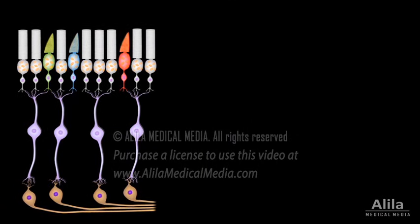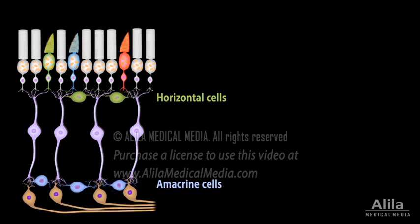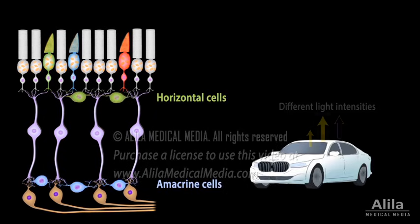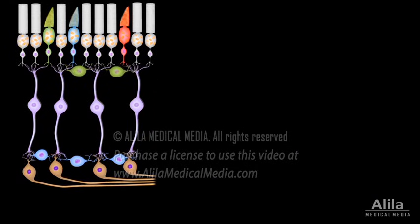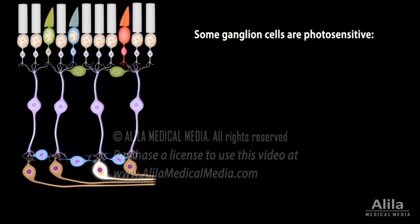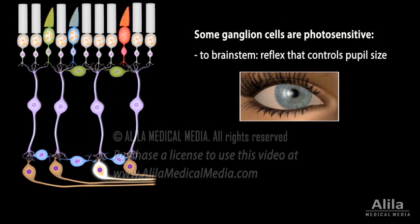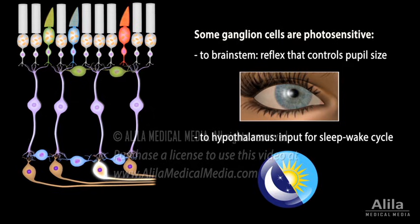There exist other cell types that form connections between photoreceptor cells or bipolar cells. They detect changes in light intensity within an image and provide additional information about contrast and edges of objects. Some ganglion cells also absorb light directly, but not for the purpose of forming images — they transmit information about light intensity to the brain stem as part of the reflex that controls pupil size, and to the hypothalamus as input for the sleep-wake cycle.